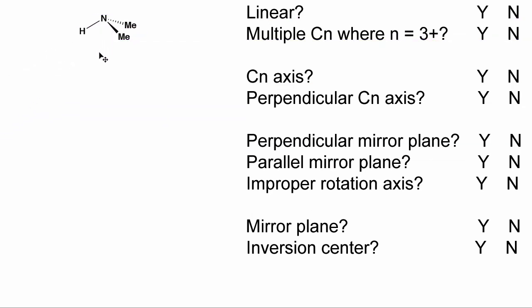The next molecule we'll look at is this dimethylamine species. Looking at this molecule, these two methyls have to be equivalent to one another, and there's nothing for the hydrogen to map into, so we don't have a rotational axis available, but we do have a mirror plane that makes the two methyl groups equivalent. Going through the flowchart: linear — no; multiple Cn axes — no; do we have a Cn axis — no. Because of that we skip ahead to the next question: does it have a mirror plane? Yes. So it has Cs symmetry and belongs to the Cs point group.